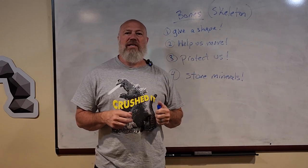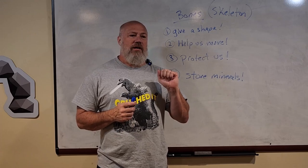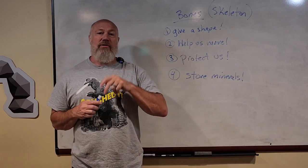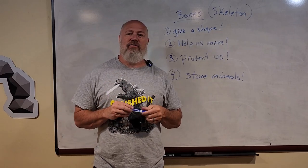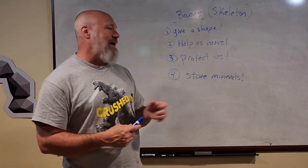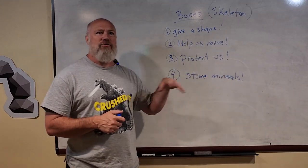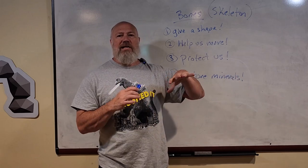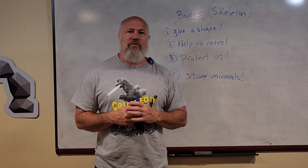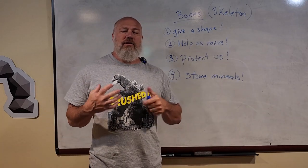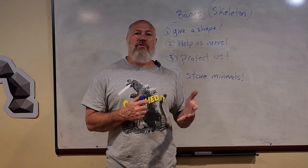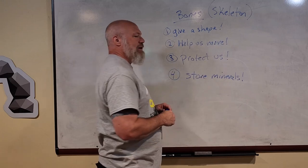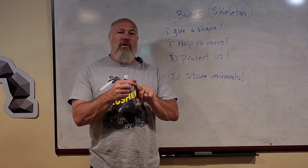Another thing bones do is store minerals. A mineral is a small substance you need to be alive — things like calcium, magnesium, phosphorus, sulfur, and iron. You even have tiny amounts of gold in you. You get these elements mainly from salts. When minerals are dissolved in water they're called electrolytes, which are very important. You store these minerals in your bones after getting them from food and water.